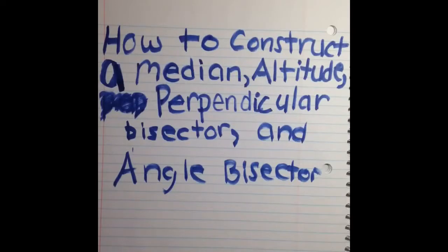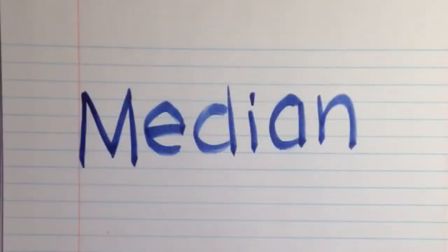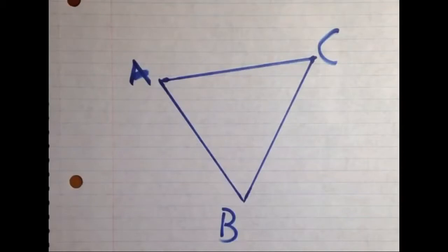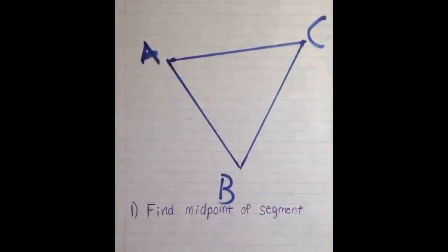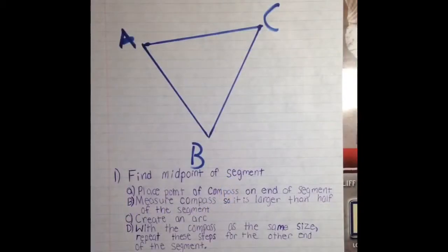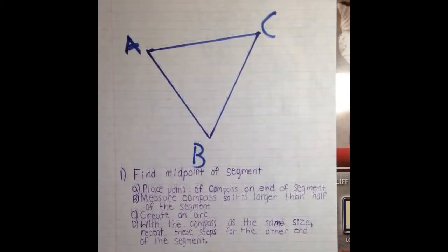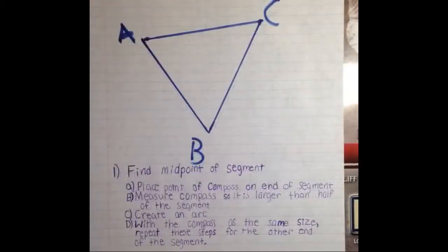How to construct a median, altitude, perpendicular bisector, and angle bisector — the materials needed are a compass and a straight edge. First, we will construct a median from vertex A to segment BC. Step one is to find the midpoint of segment BC. To do this, place the point of the compass on the end of the segment. Next, measure the compass so that it is larger than half of the segment. After this, create an arc. With the compass the same size, repeat these steps for the other end of the segment.